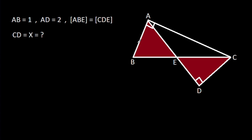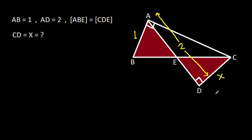In this video, we have been given that angle BAC is 90 degrees, angle ADC is 90 degrees, AB is 1, AD is 2, and area of ABE is equal to area of CDE, and CD is X. We have to find X.